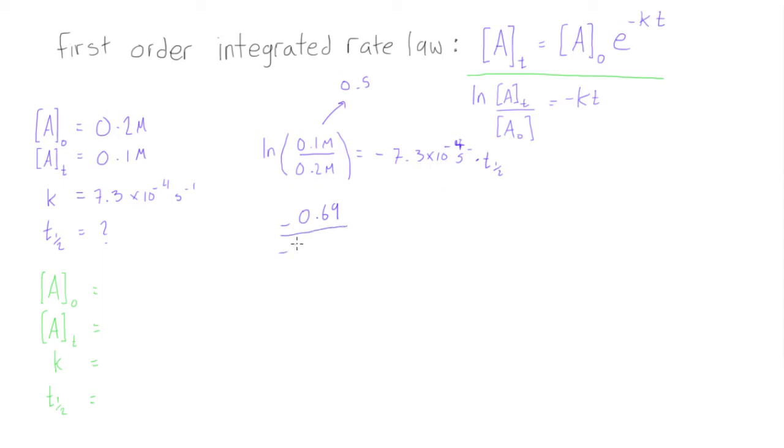Now what we can do is we can divide both sides by the k value, so over negative 7.3 times 10 to the negative 4 per second, and this is going to be equal to our half-life or t at 1 half.